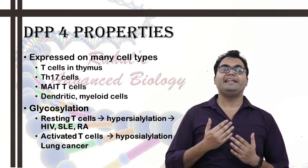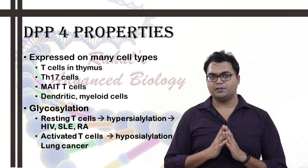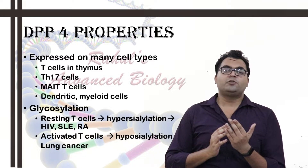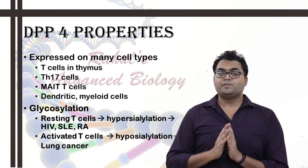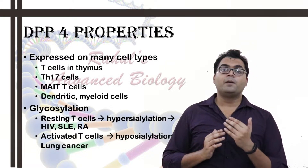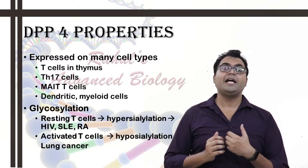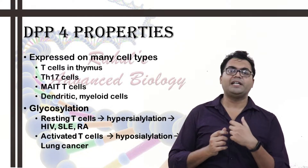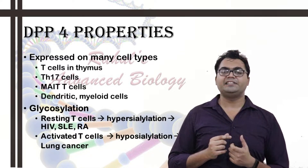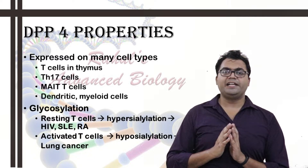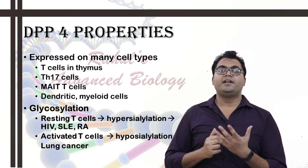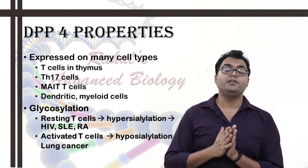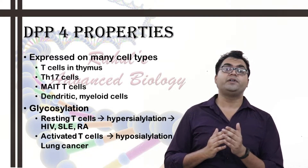Glycosylation could be done by sialic acid — various types of acids or glucose residues could be used. Sialic acid can be hyper or hypo: more or less sialic acid can be added. In resting T cells, it has been found that more sialic acid is added — it is hypersialated. In activated T cells, hyposialation is prevalent. Hypersialation is associated with HIV, rheumatoid arthritis, systemic lupus erythematosus, and other autoimmune disorders. Hyposialation, on the other hand, is associated with lung cancer.